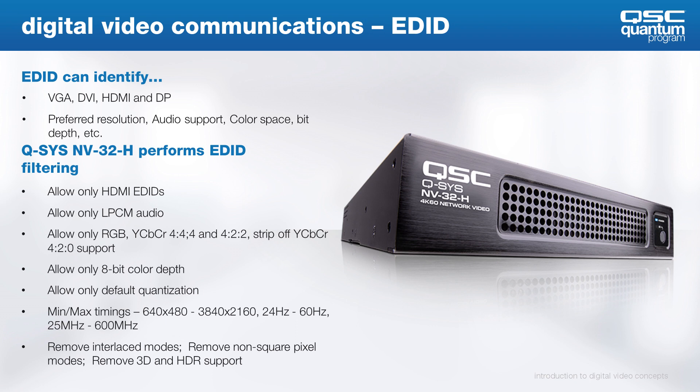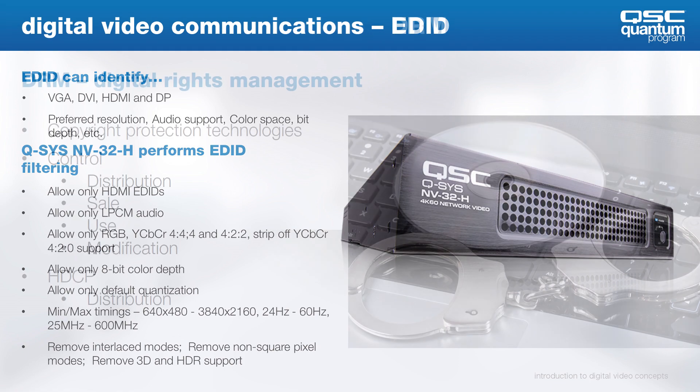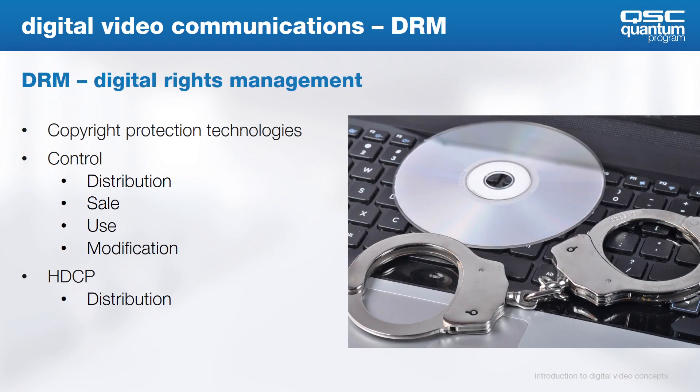For example, we accept up to 8 channels of LPCM audio on any HDMI input, but we don't currently accept Dolby or DTS encoded audio. In this case, we remove the support for Dolby, DTS, and any other form of bitstream audio, and only list up to 8 channels of LPCM audio.